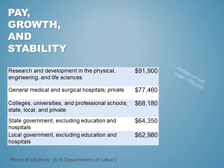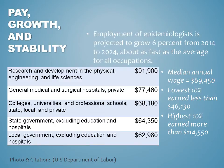Regarding pay, growth, and stability: employment is expected to grow 6% from 2014 to 2024, about as fast as all occupations. The median wage is around $69,000 a year. The lowest 10% earned less than $46,000, and the highest 10% earned more than $114,000. With a master's degree you'll generally earn near the median wage, while PhDs tend to earn in the highest 10%, at $114,000 or more a year.